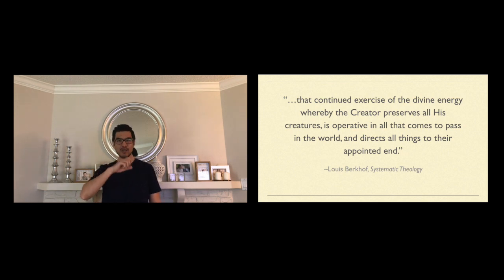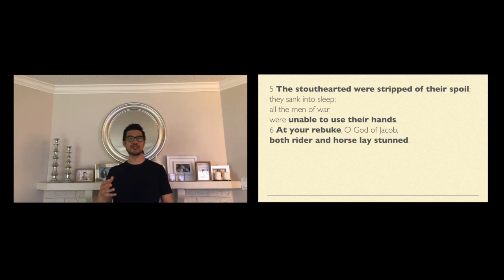Notice here in verses five and six the descriptions of how God providentially is involved in history: The stout-hearted were stripped of their spoil. The men of war were unable to use their hands. At your rebuke—there it is, God's involvement in history—God by design strips away the strength of these men and nations. At your rebuke, O God of Jacob, both rider and horse lay stunned. Let me put it very practically: some of us have lost jobs, some of us are being tested in some way. What a robust faith in God's good providence believes is that even when we lose a job, even when we are struggling emotionally and mentally because of this lockdown, God has allowed it on purpose because he has a greater good.